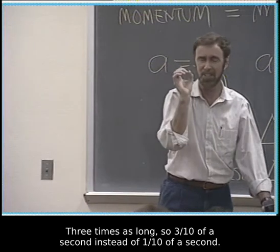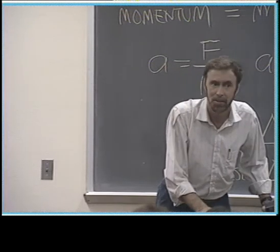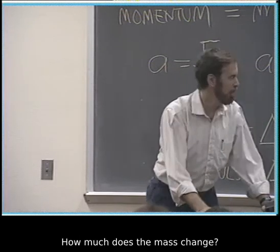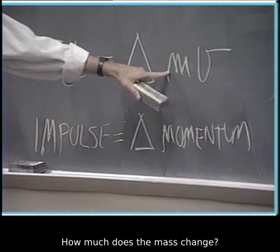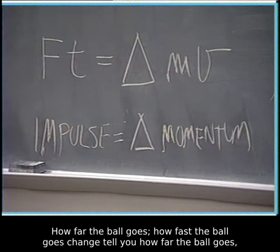Three tenths of a second instead of one tenth of a second. How much will the momentum change? Three times. How much does the mass change? Not at all. So what changes three times? How fast the ball goes.